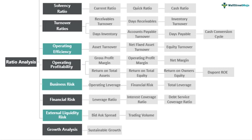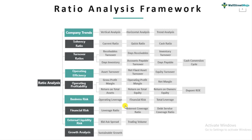Last is the growth analysis, where we look at how the company can grow on a sustainable basis, how it has been growing over the years, and whether it can sustain that growth rate going forward. There are specific formulas to look at, and we will also examine the limitations of those formulas. This is the overall framework through which ratio analysis is done.